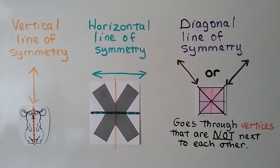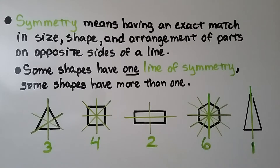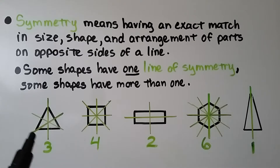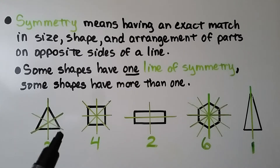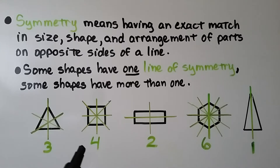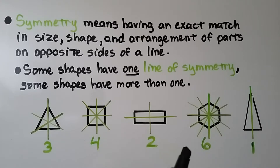Symmetry means having an exact match in size, shape, and arrangement of parts on opposite sides of a line. Some shapes have one line of symmetry, some have more than one. This triangle has three sides that are the same length — it has three lines of symmetry. The square has four lines of symmetry. This rectangle only has two. This hexagon has six lines of symmetry, but this triangle only has one.